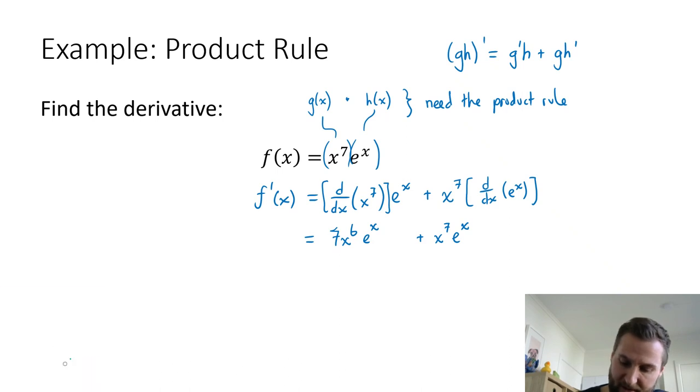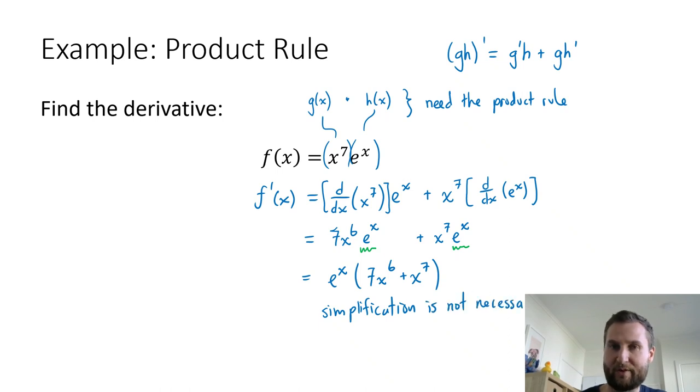Sometimes, though, you can see you have some like terms and you might want to combine or factor these out. Maybe we could factor out e^x, and then we could say this is 7x^6 plus x^7. Or maybe you want to factor out x^2, x^3, x^4, x^5, or x^6. It's up to you. There's no new information between these two steps. I say simplification is not necessary. It's more of a personal preference.